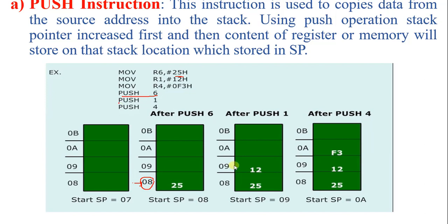If we want to push another data into the stack, we use the PUSH 1 instruction. This instruction tells us to push the content of R1 register into the stack area. Before pushing data, the stack pointer is incremented by 1 again: 08H + 1 = 09H. So the next location where we put data is 09H, and 12H is stored there. Again the stack pointer is incremented by 1, so the next location is 0AH. When the PUSH 4 instruction is executed, F3H is pushed into the 0AH memory location. In this way we push or store data into the stack area.